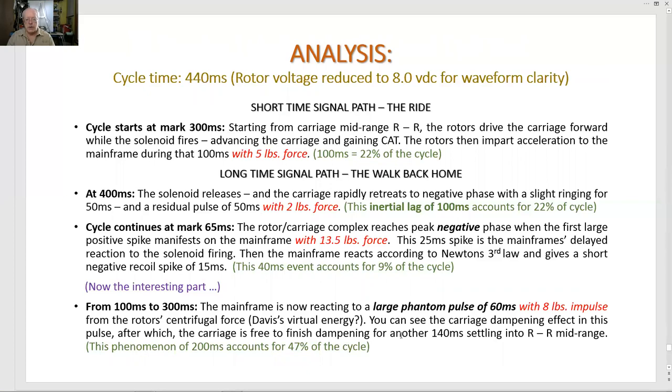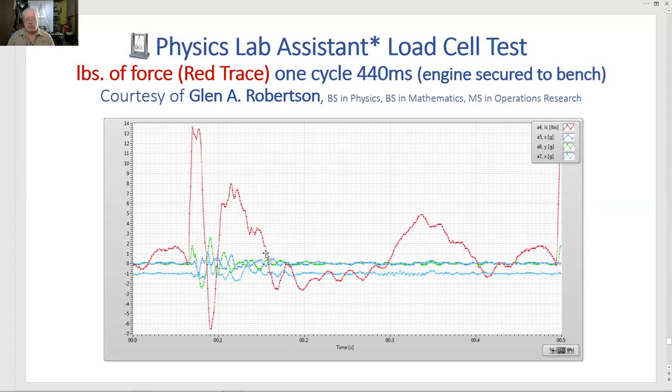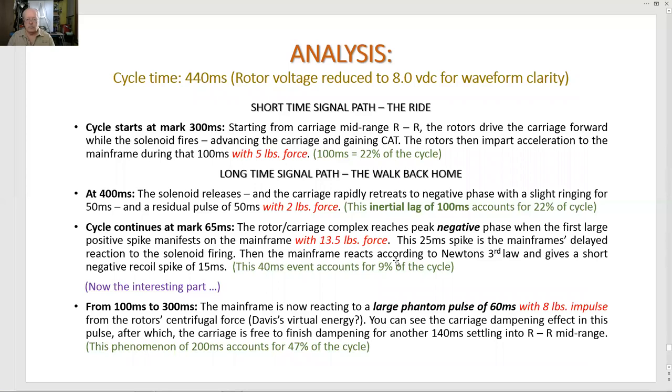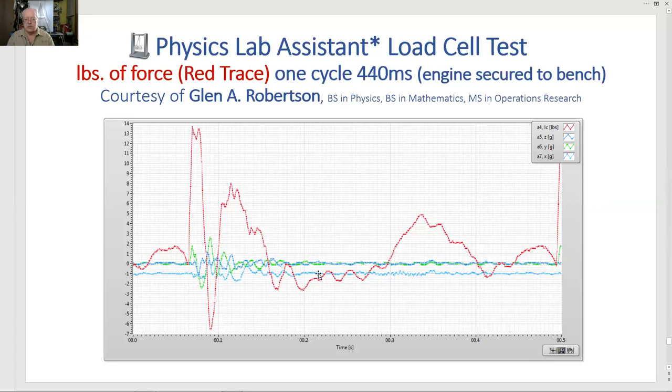You can see the carriage dampening effect in this pulse, after which the carriage is free to finish dampening for another 140 milliseconds, settling into RR midrange. So here's the carriage. It's trying to dampen out. That pulse is there. And then the pulse is gone and the carriage is dampening out, getting ready to start another cycle. This phenomenon is 200 milliseconds and accounts for 47% of the cycle. So as you see here, in one cycle we have four positive pulses.